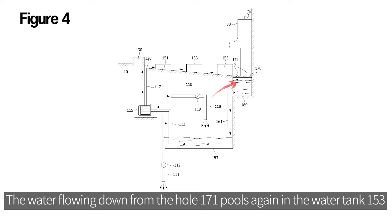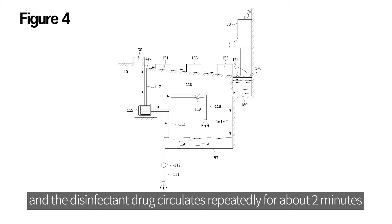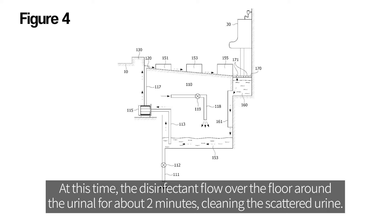The water flowing down from hole 171 pools again in the water tank 153, which is the original position, and the electric motor pump 115 brings the water up to the 120 part again, and the disinfectant drug circulates repeatedly for about two minutes.